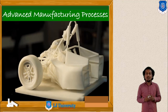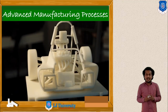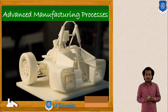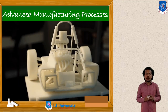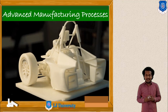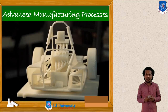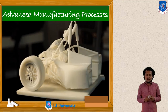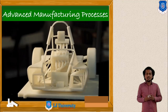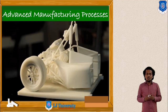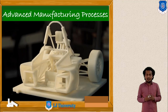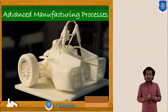The raw material of your process can be chosen from powder form, liquid form, or solid form. Your final product will be in solid form. You can choose your raw material and classify the various Rapid Prototyping processes accordingly.